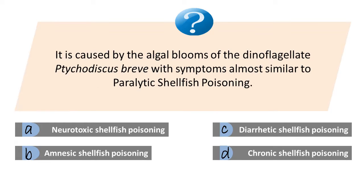It is caused by the consumption of molluscan shellfish contaminated with brevetoxins, such as during blooms of Karenia brevis, with symptoms almost similar to paralytic shellfish poisoning. A) neurotoxic shellfish poisoning, B) amnesic shellfish poisoning, C) diarrhetic shellfish poisoning, D) chronic shellfish poisoning. The answer is A, neurotoxic shellfish poisoning.